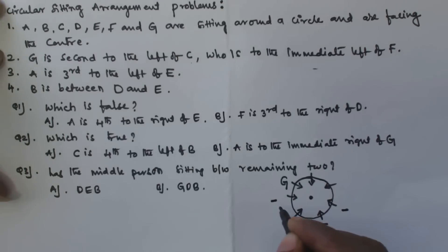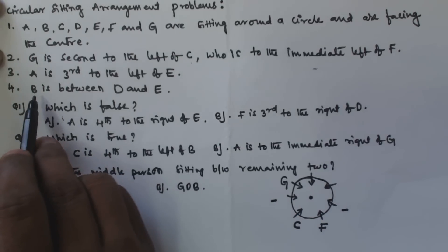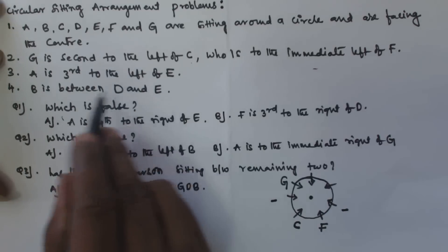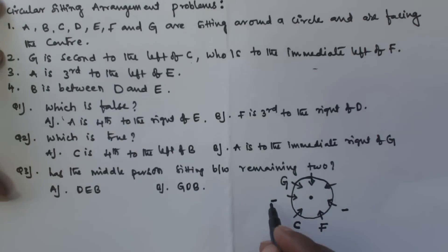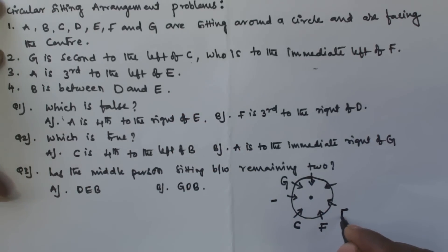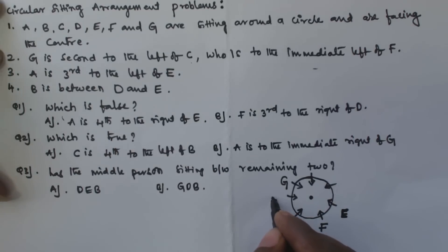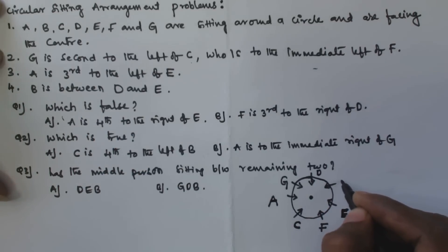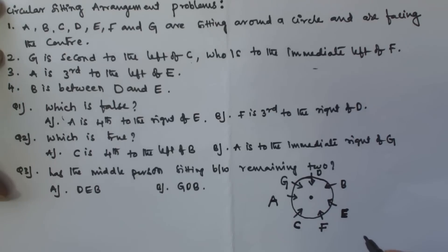We also consider statement four: B is between D and E. If E is placed at a certain position where the third-to-the-left spot is free, then A goes there. With E placed correctly, we put D on one side and B between D and E. This finalizes all seven sitting positions for A, B, C, D, E, F, and G.